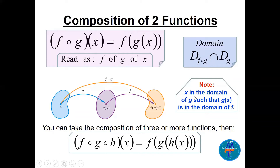Note that x must be in the domain of g, and g(x) must be in the domain of f. To find the domain of f∘g: first find the domain of the composed expression, then intersect it with the domain of g — the original first function applied.